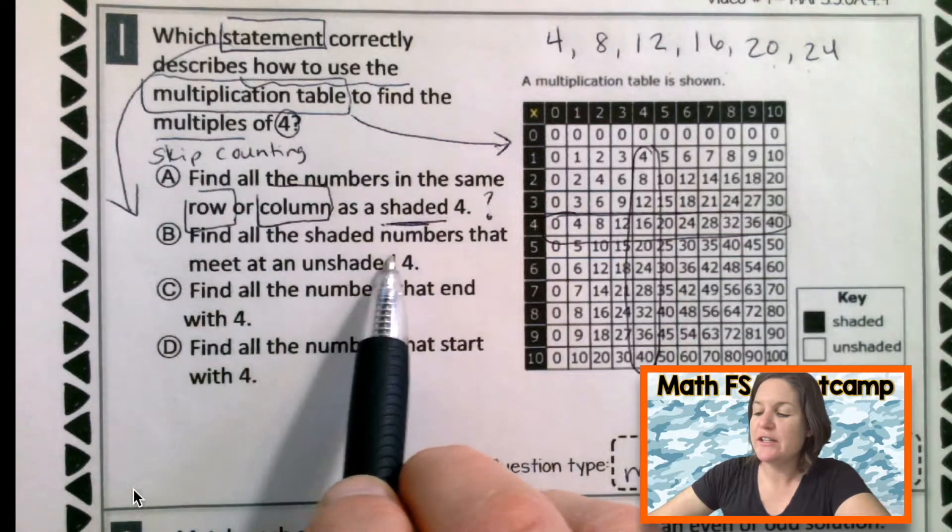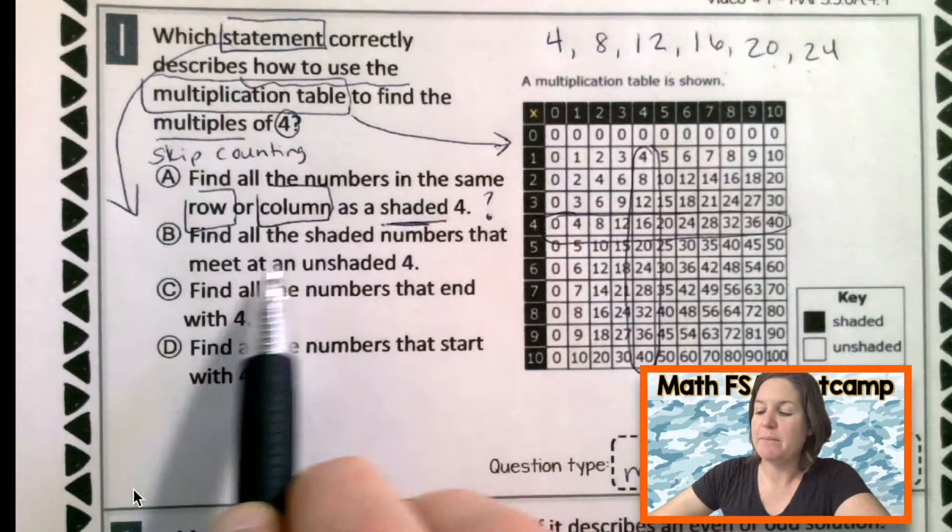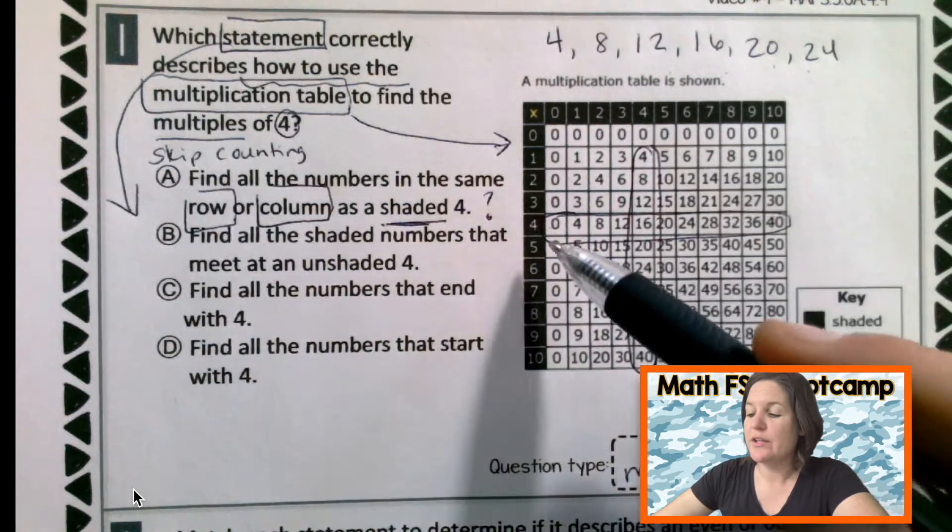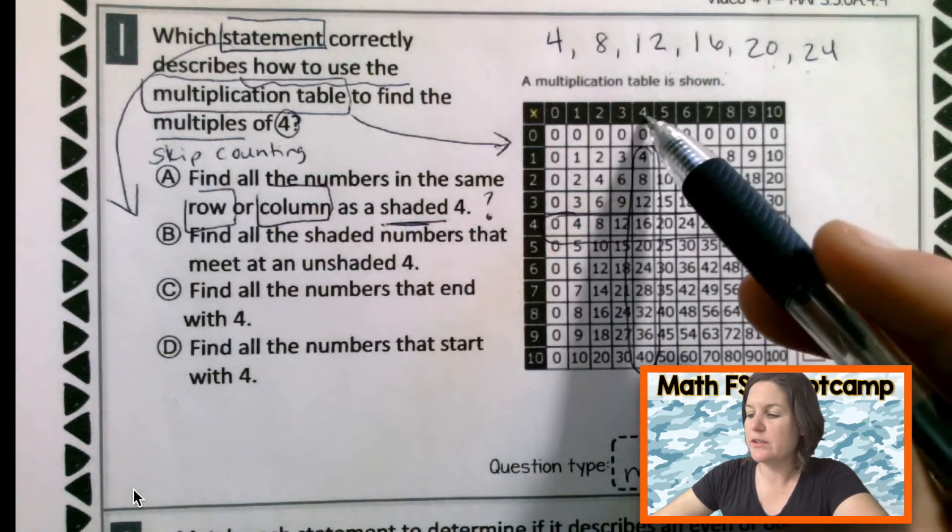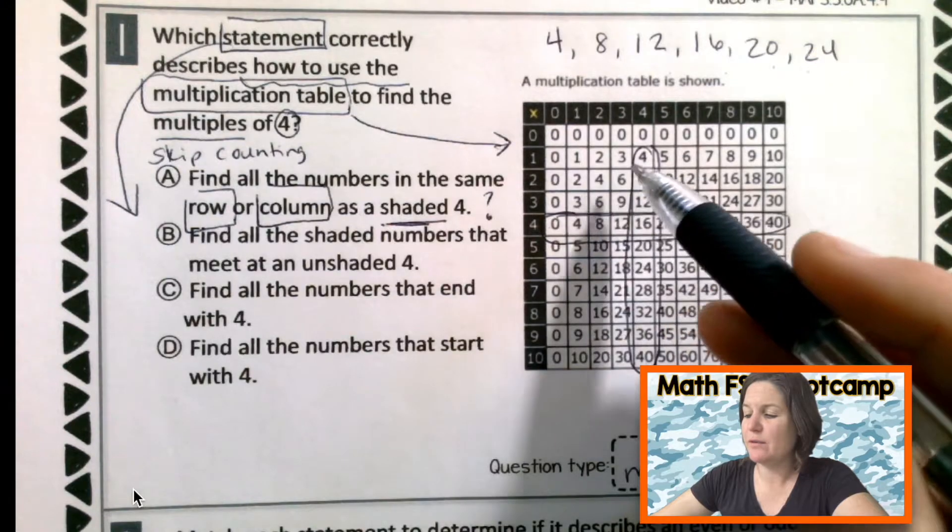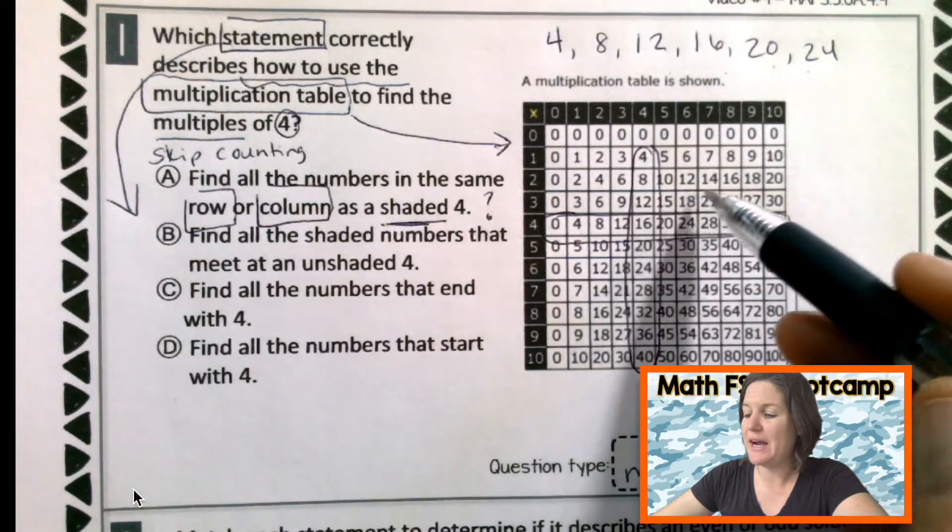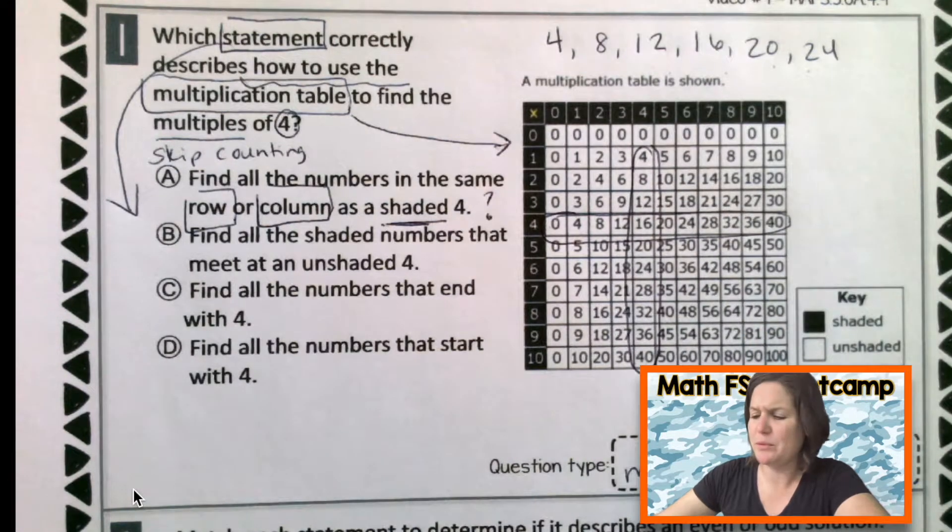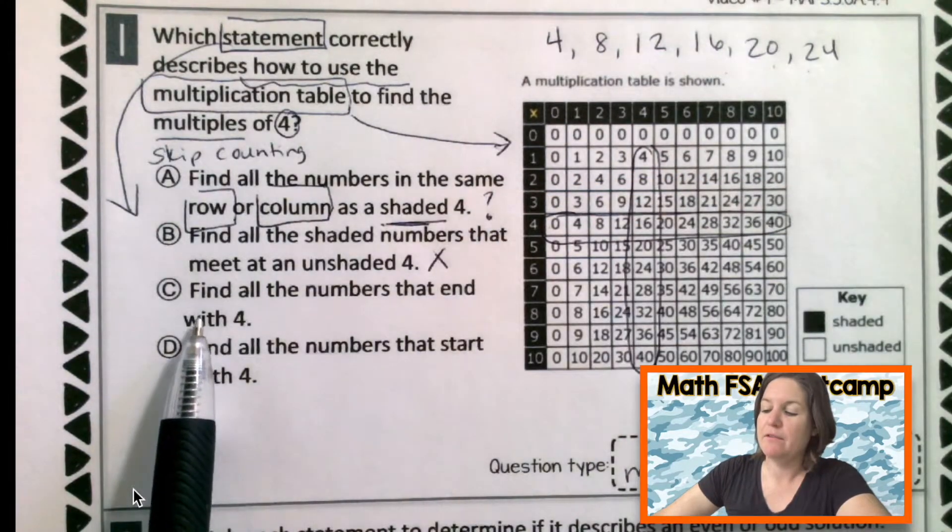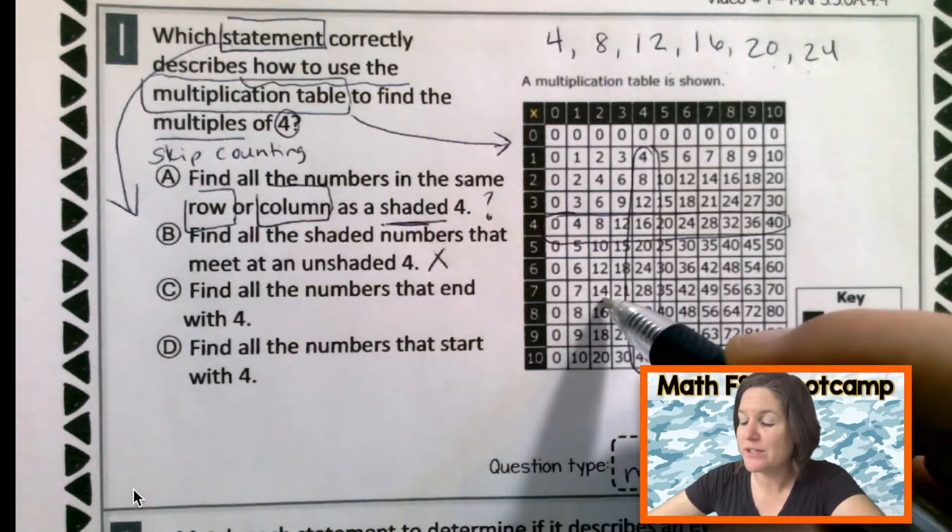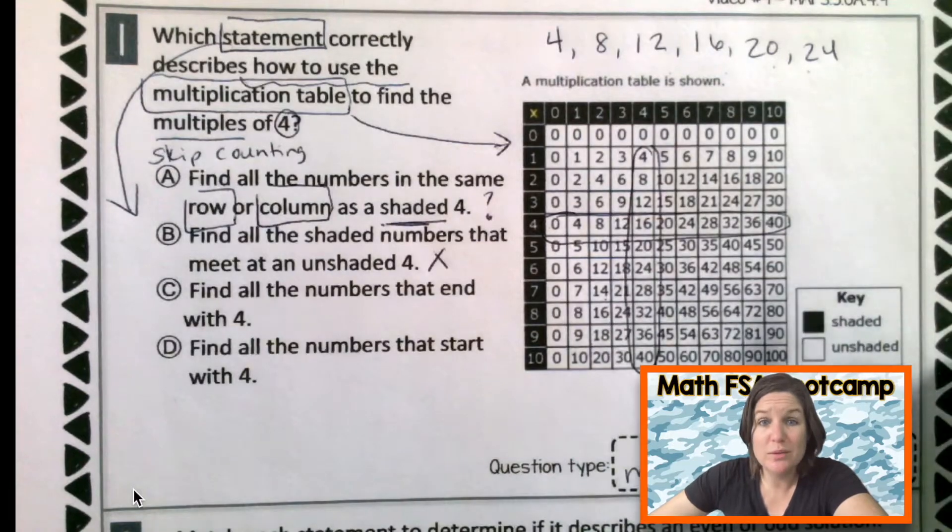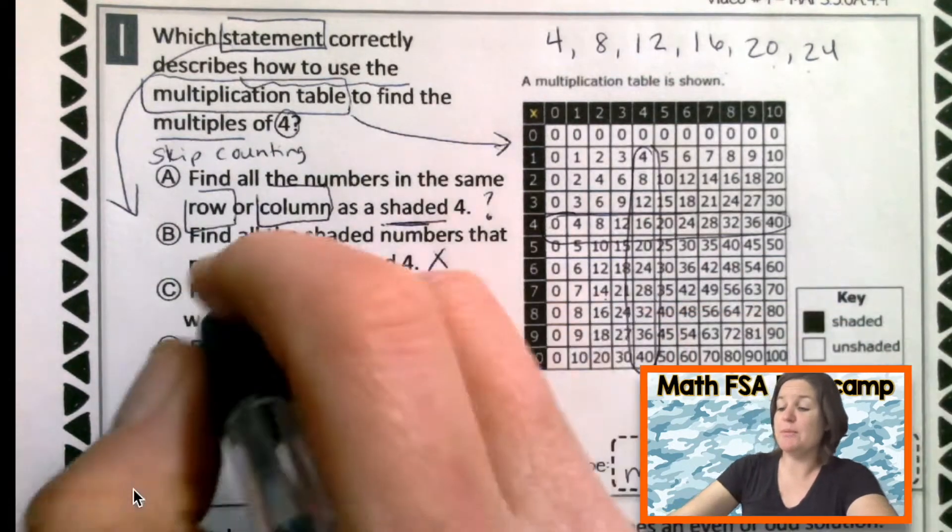Find all the shaded numbers that meet at an unshaded 4. So these are the shaded fours. I see unshaded fours like randomly throughout, but those aren't the multiples of 4. So let's go ahead and eliminate that one.